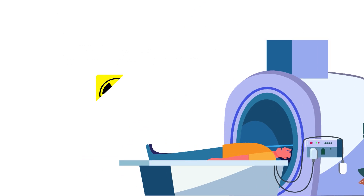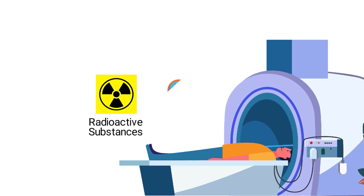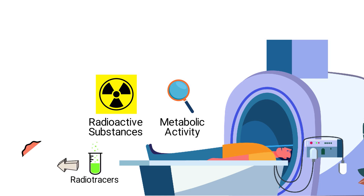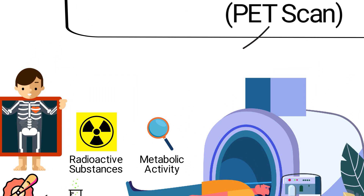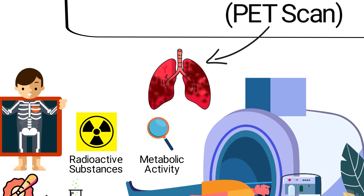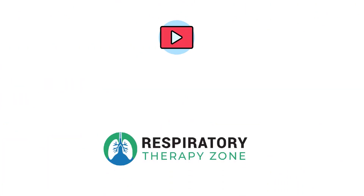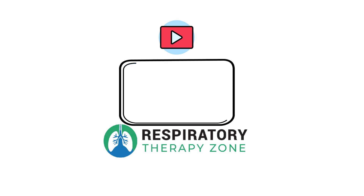Finally, we have positron emission tomography, or PET scan for short. It's an imaging technique that uses radioactive substances to examine the metabolic activity of various parts of the body. Radiotracers are injected or ingested into the body and help produce gamma rays, which provide a three-dimensional visual of the target area. In respiratory care, a PET scan is typically recommended for the diagnosis or evaluation of lung cancer.